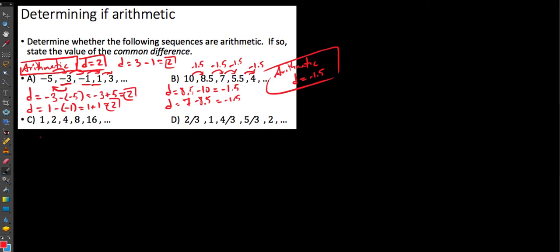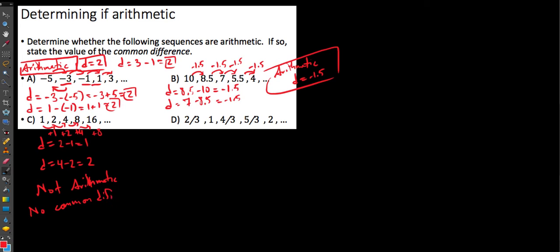Looking at sequence C, do we have a common difference? 2 minus 1 equals 1, so it increases by 1 from the first to second term. But 4 minus 2 equals 2 — it goes up by 2. And then up by 4, and up by 8. Because these differences between numbers are not the same, this is not arithmetic — there is no common difference.